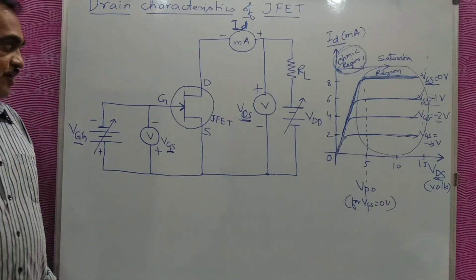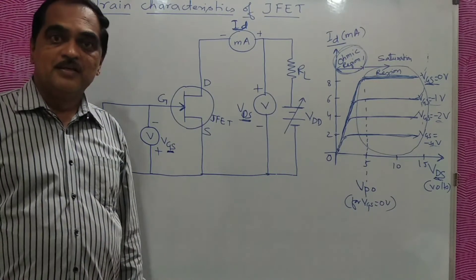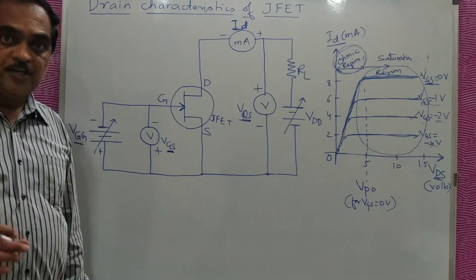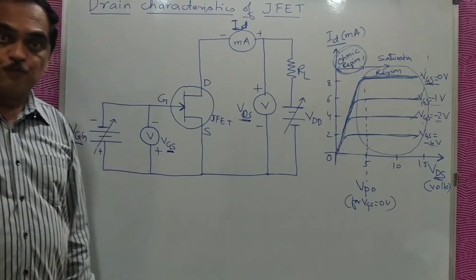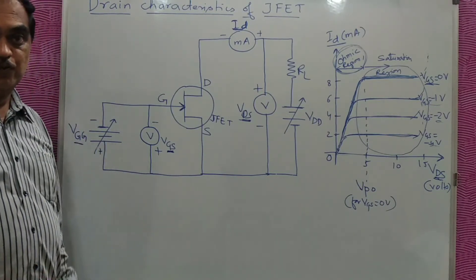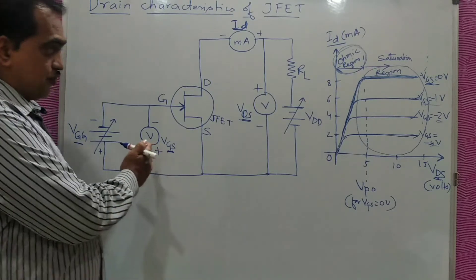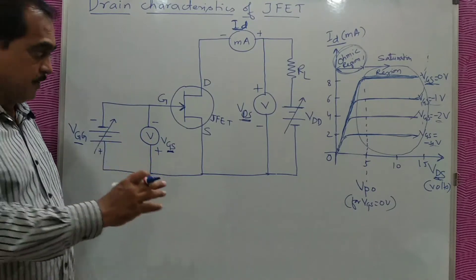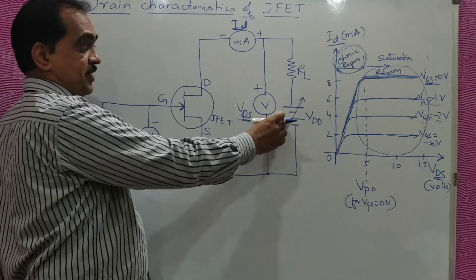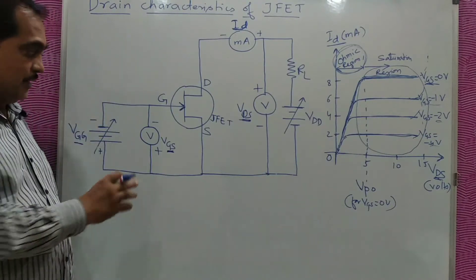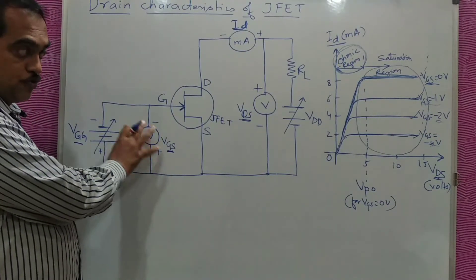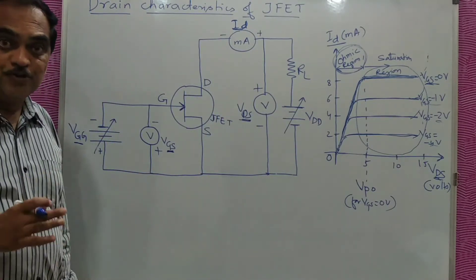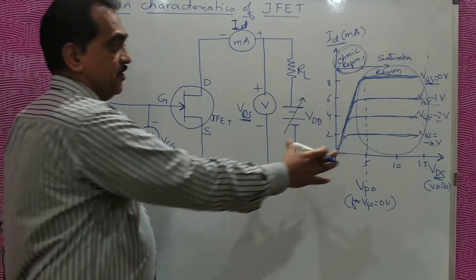So this is your Drain Characteristics, also called Output Characteristics for JFET — a graph of drain-source voltage VDS and drain current ID for constant input voltage. Keep a constant input voltage, vary VDS in steps, note down both, draw one curve. Repeat for different constant values of VGS to get multiple curves — that is how you plot the Drain Characteristics of JFET.